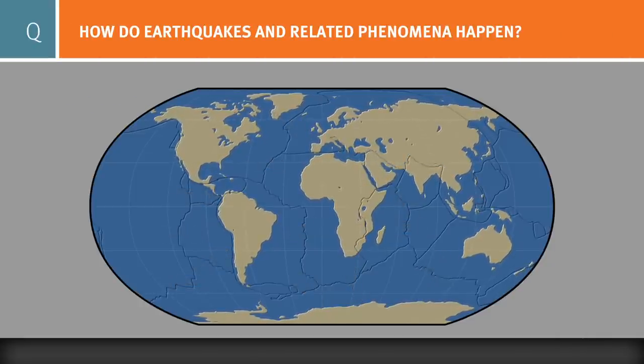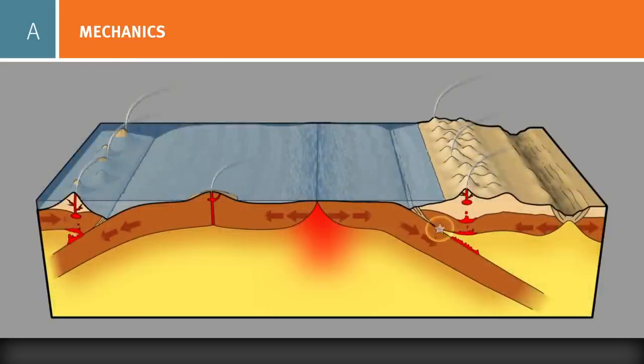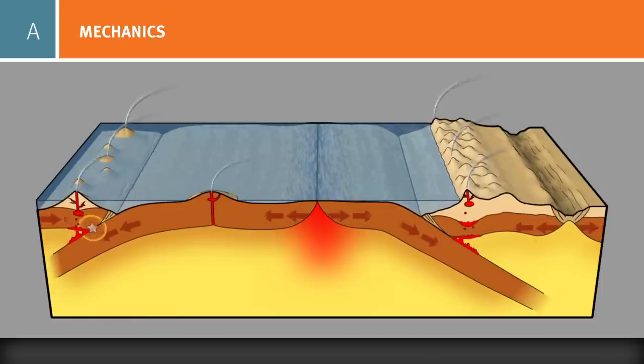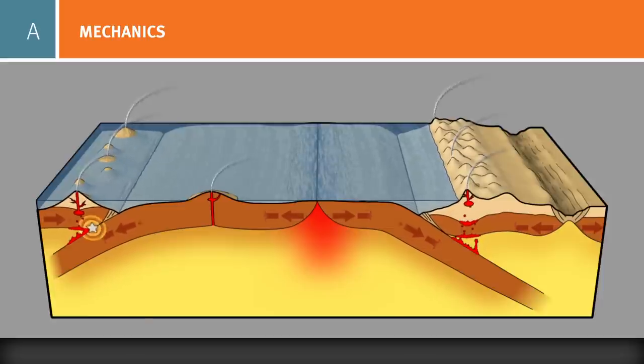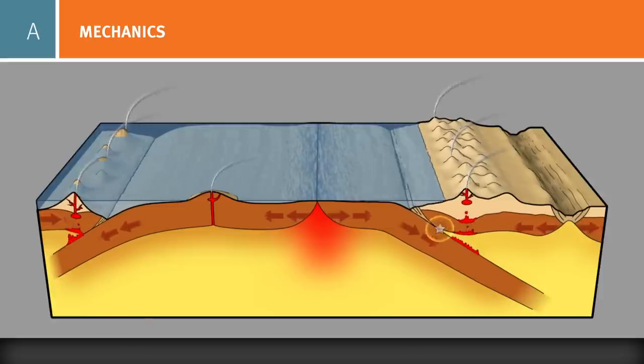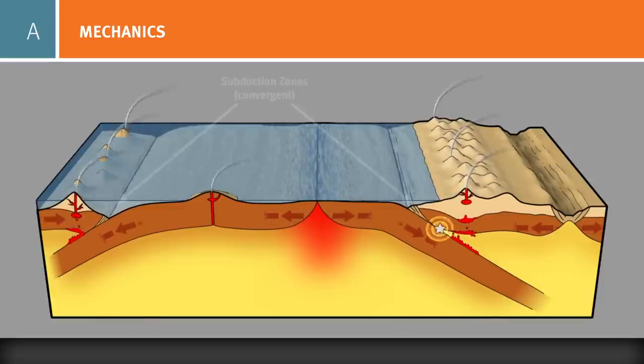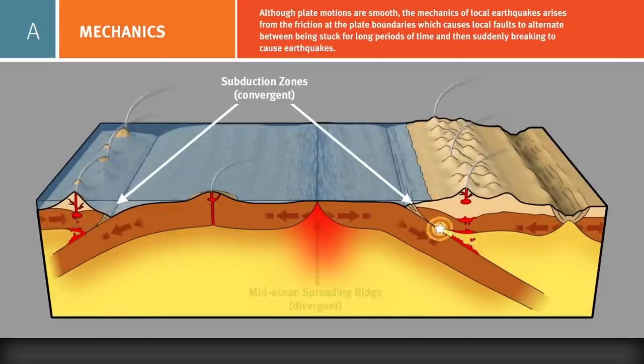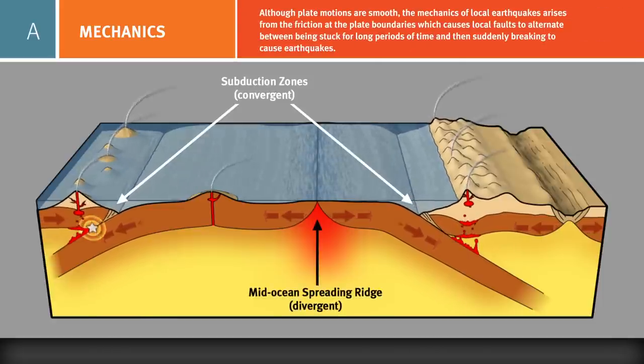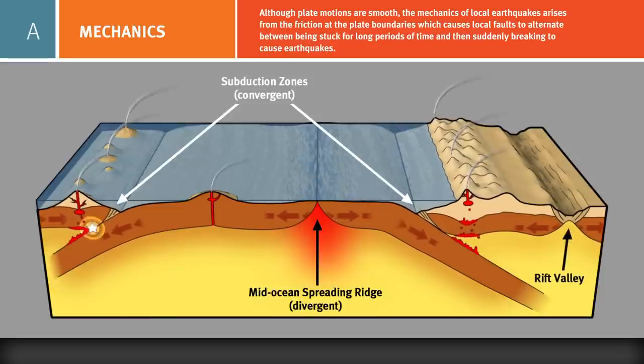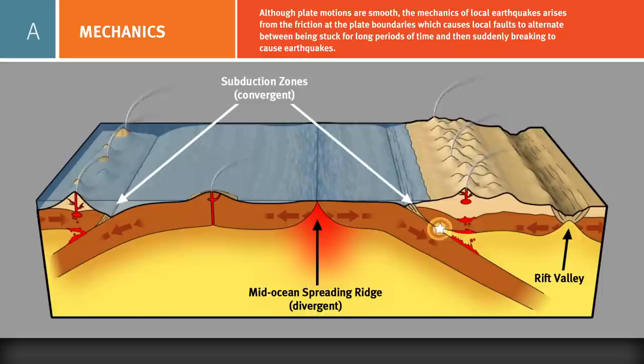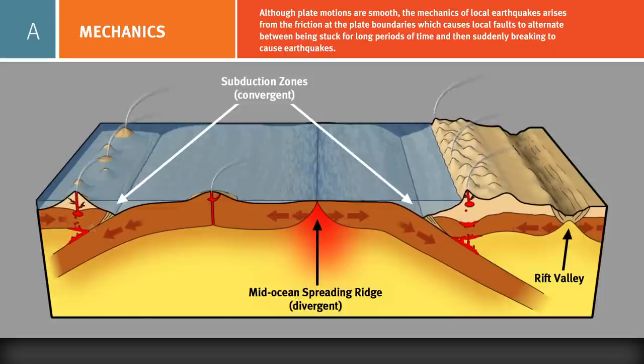To understand how earthquakes happen, we must examine the mechanics of the forces and motions affecting plates and their interactions with one another. You are viewing two oceanic plates moving away from a spreading center. In cross-section, we can better see the convergence of plates at subduction zones and the divergence of plates at a mid-ocean spreading ridge or a rift valley. Although the plate motions are generally smooth, the mechanics of earthquakes arises from the friction at the plate boundaries. Faults held by this friction remain stuck for long periods of time and then suddenly break in major earthquakes.